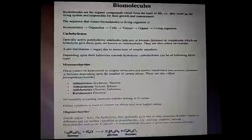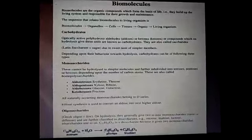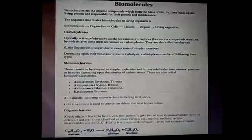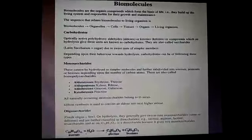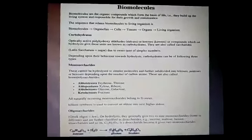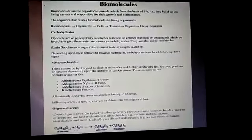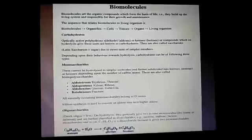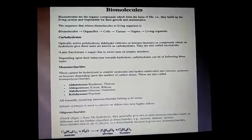In disaccharides, carbohydrates which upon hydrolysis give 2 molecules of the same or different monosaccharides are called disaccharides — examples include sucrose, maltose and lactose. In polysaccharides, carbohydrates which upon hydrolysis give a large number of monosaccharide molecules are called polysaccharides. The most commonly occurring polysaccharides are starch, cellulose and glycogen.